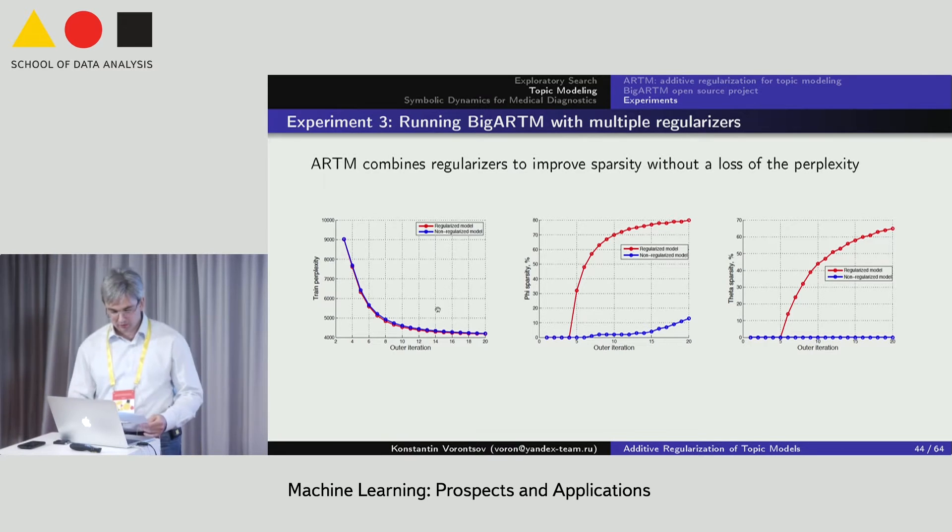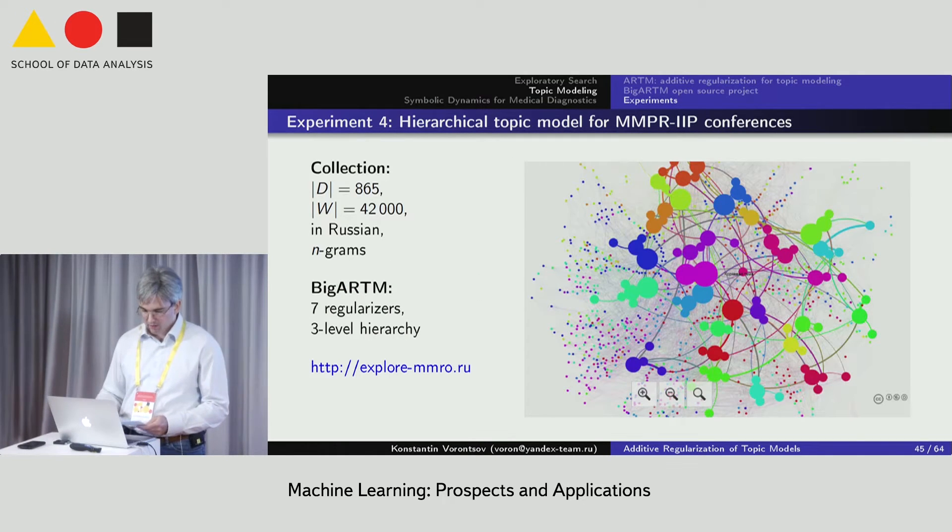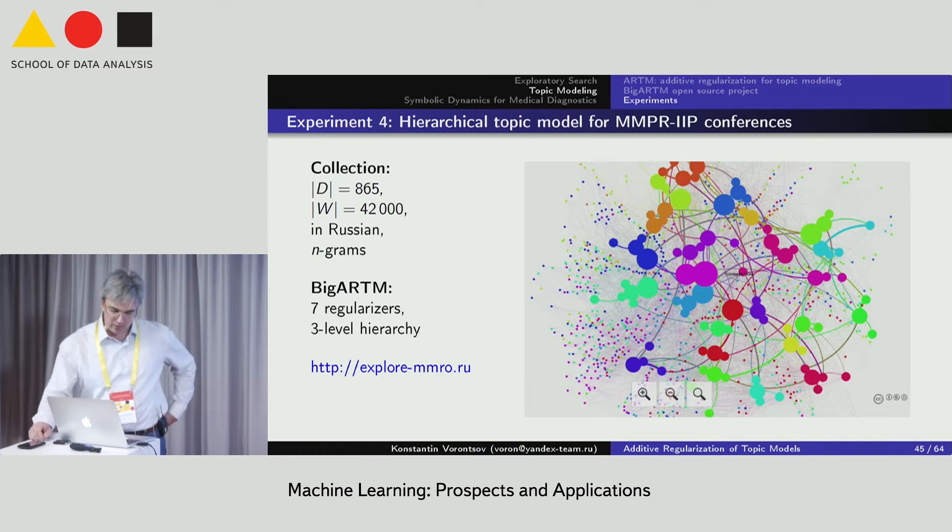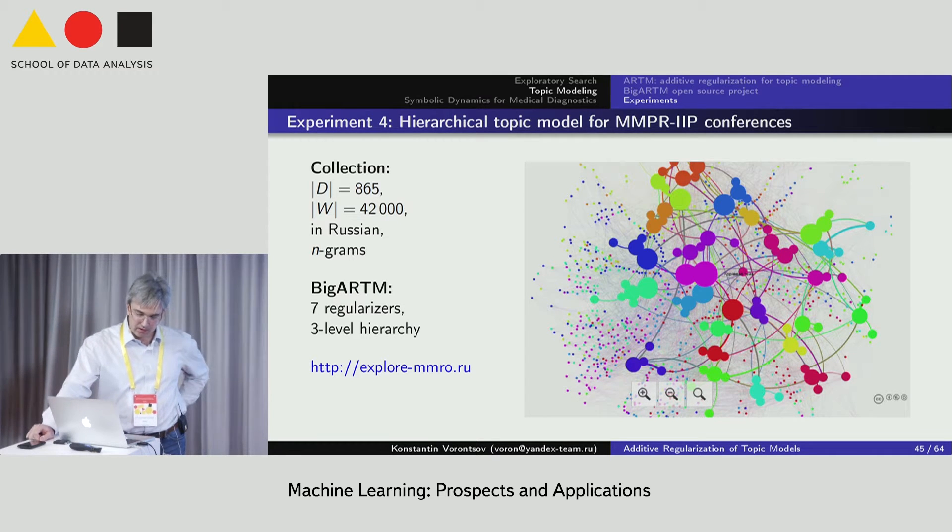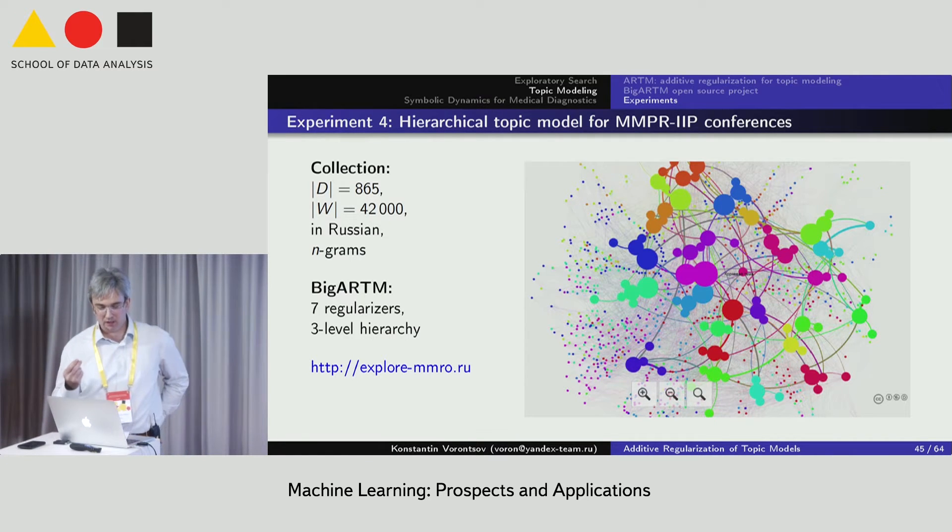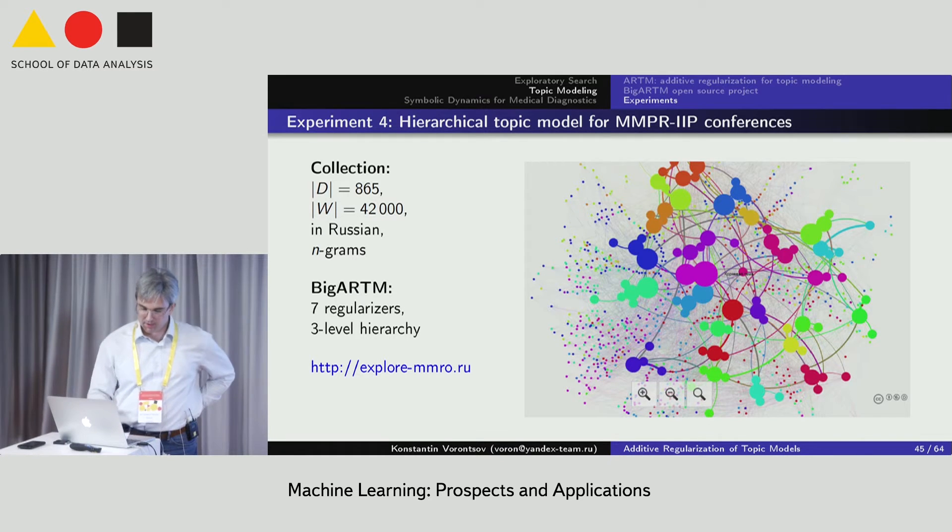In the next experiment, we build the hierarchical topic model of two Russian conferences on machine learning, mathematical methods of pattern recognition and intellectualization of information processing. Here, we use the combination of seven regularizers to make topics sparse, decorrelated, free of stop words, and the most important to bind subtopics with their parent topics.